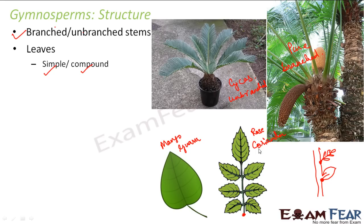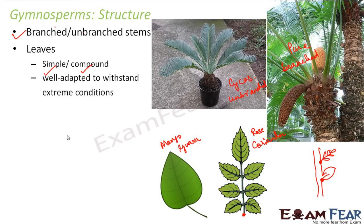Gymnosperms can have both simple and compound leaves. The leaves are well adapted to withstand extreme conditions. These plants are evergreen, and because the shape of their leaves is adapted to extreme conditions, they can survive in all types of environments.